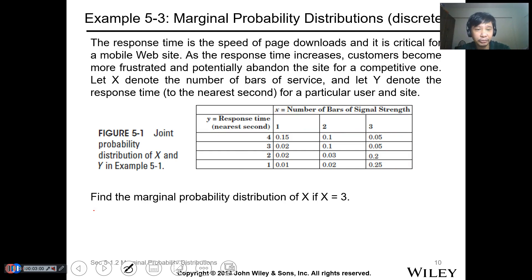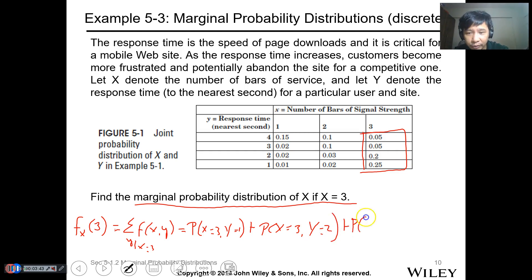For example, let's have this problem. The response time is the speed of page downloads and it's critical for a mobile website. As the response time increases, customers become more frustrated and potentially abandon the site for a competitive one. Let x denote the number of bars of service and let y denote the response time to the nearest second for a particular user and site. Given this data, the probability is in this box. We're asked to determine the marginal probability distribution of x if x equals 3.